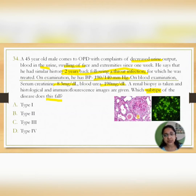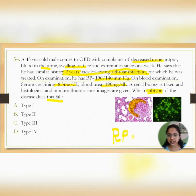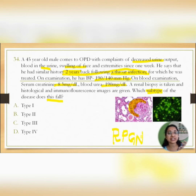The first key point from this image is these crescent-like deposits in the glomerulus. Crescent-like deposits indicate RPGN — rapidly progressive glomerulonephritis. In RPGN there are three subtypes: Type 1, Type 2, and Type 3.